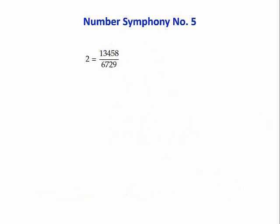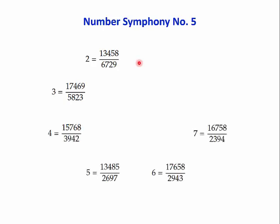Here's a different kind of symphony pattern. You look here and you'll see that you've got a fraction equal to two. So the top number must be double the bottom number. But what's happened here is you've got all the digits from one to nine. Can we do that with other numbers? For example, three. Yes. And four, five, six, seven, eight, nine. All using the digits one to nine.